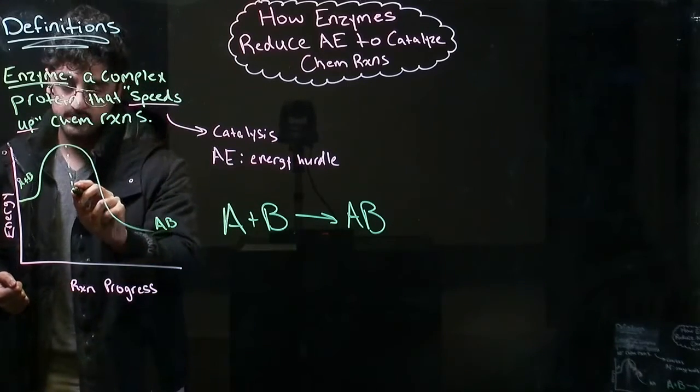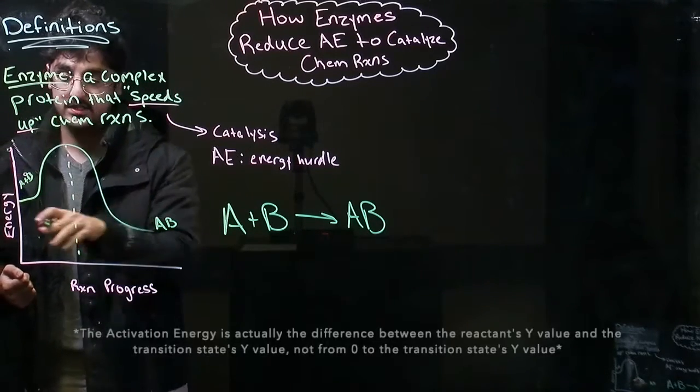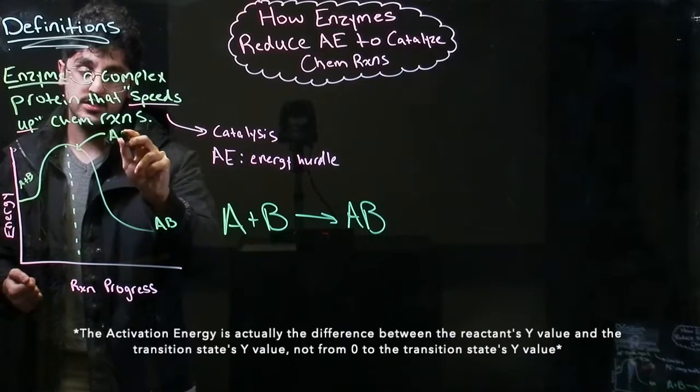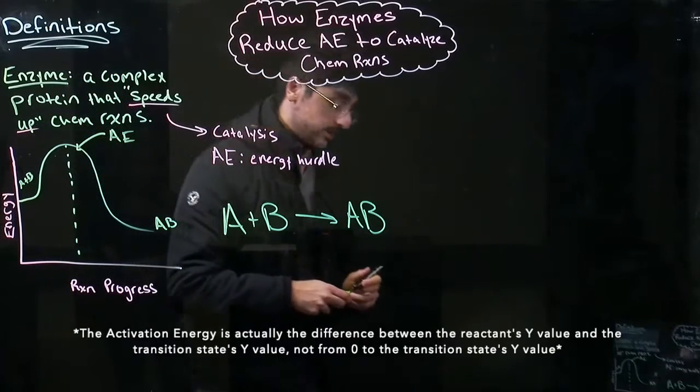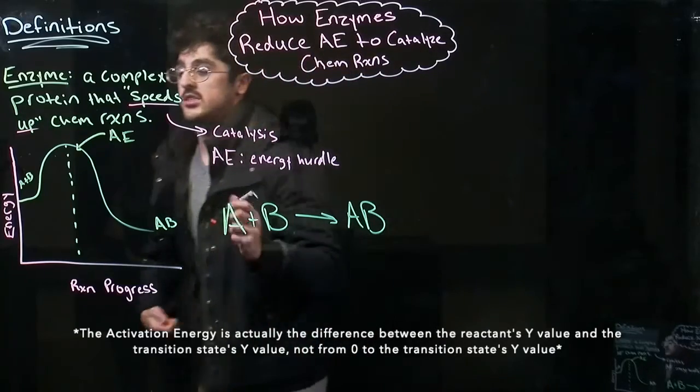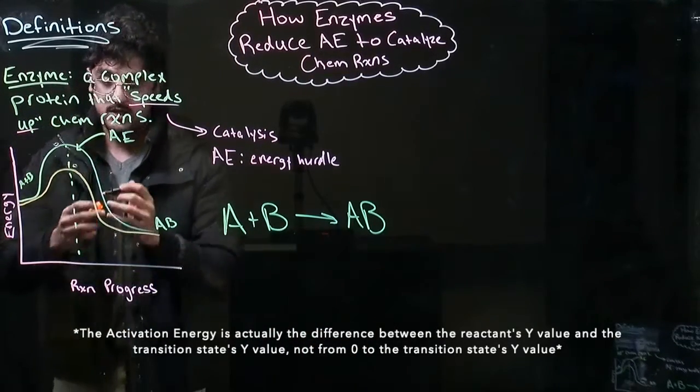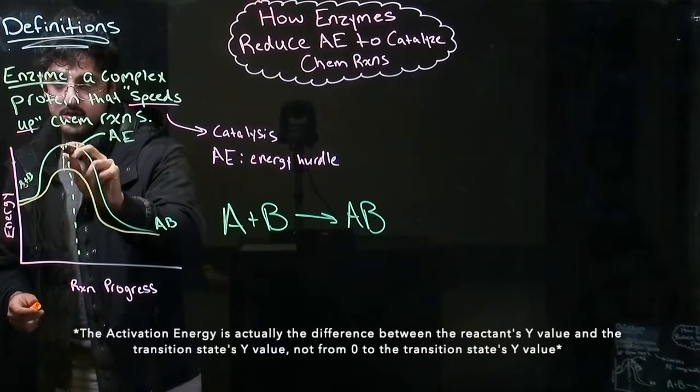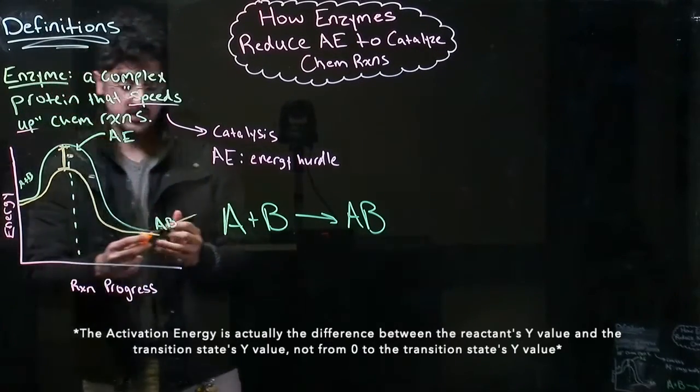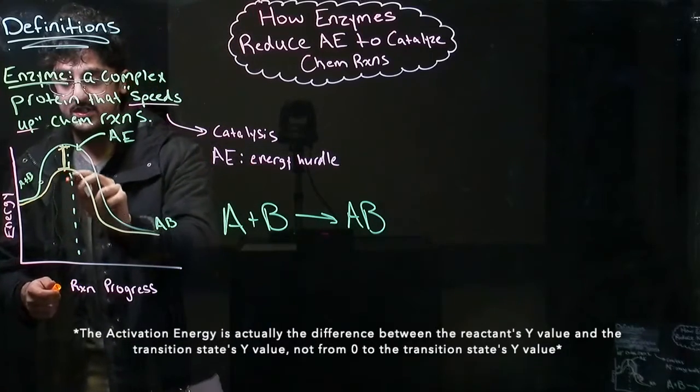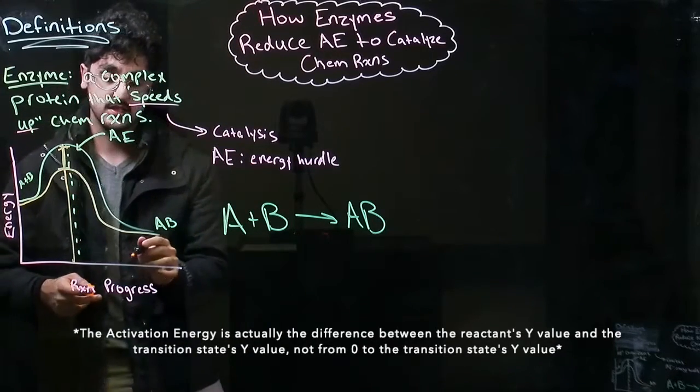This right here, the energy that's needed to take place, so the y-axis, is your activation energy. So the presence of an enzyme essentially takes this reaction and makes it so that the activation energy is lower. So now you're left with this here. So it significantly decreases the activation energy needed for the reaction to take place.